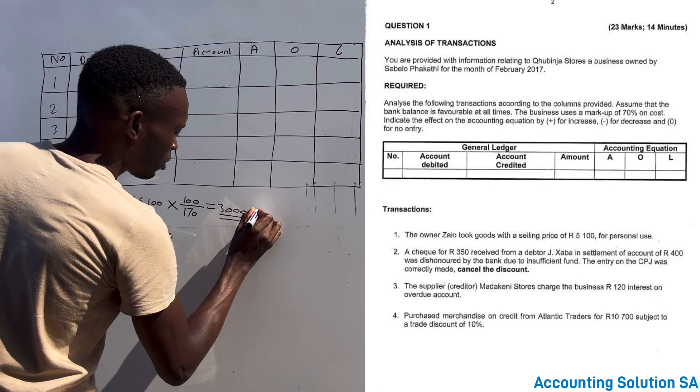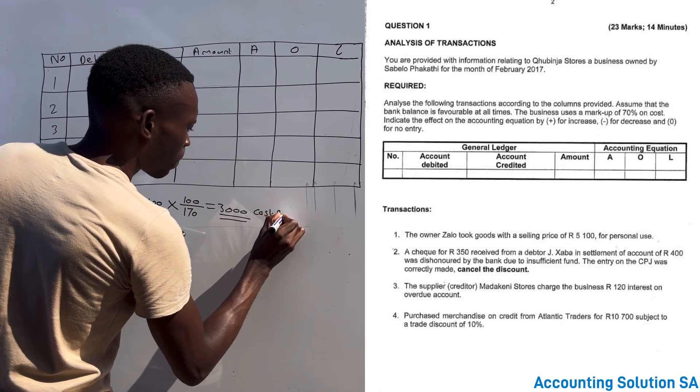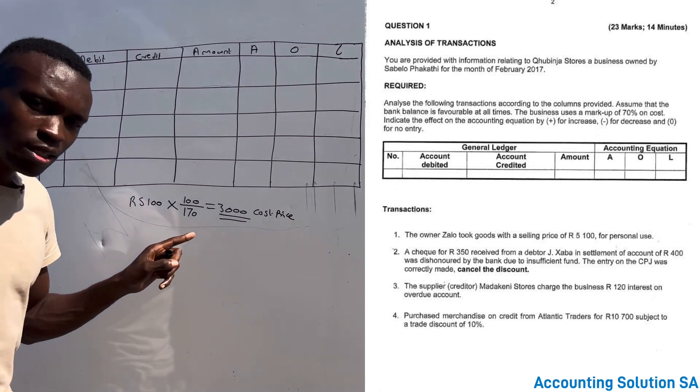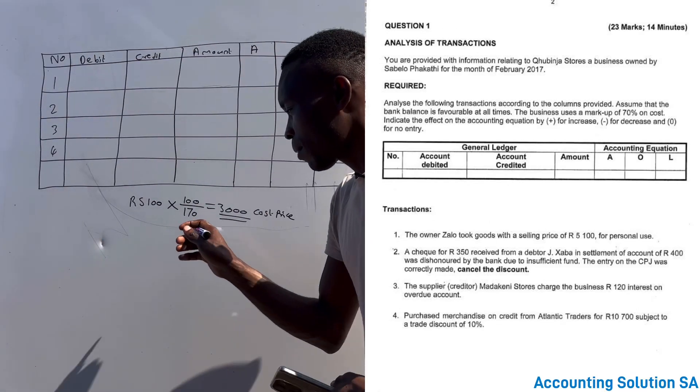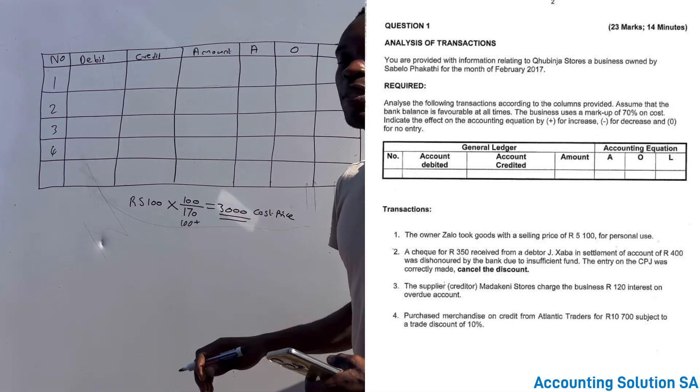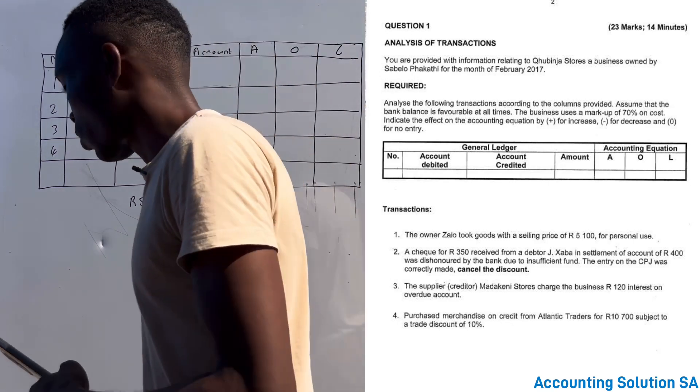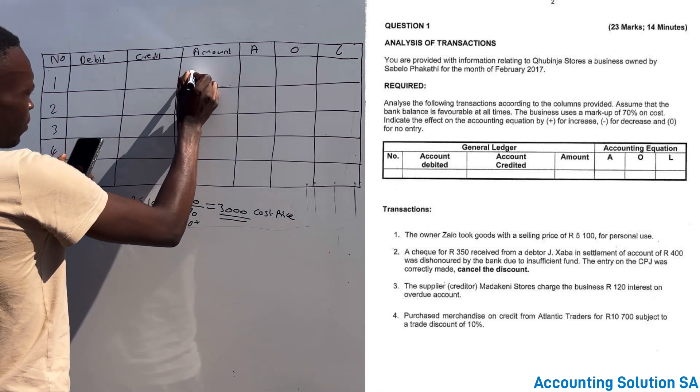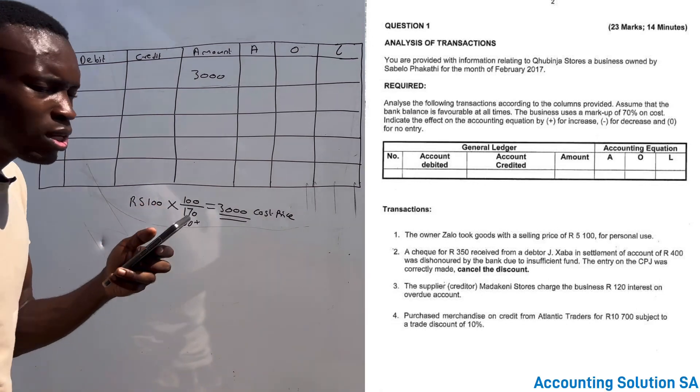This is our cost price. It's 170 because our markup is 70, and remember it's always 100 here. What you need to do is add the markup that you are given, then you will get the correct answer. Which means that our amount will be 3,000 here.